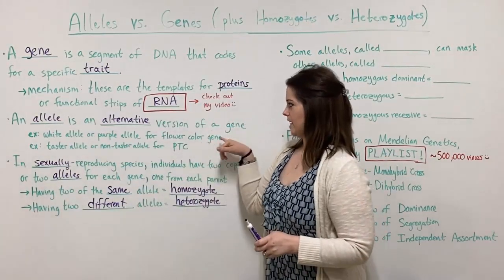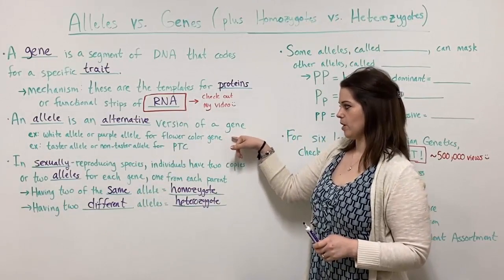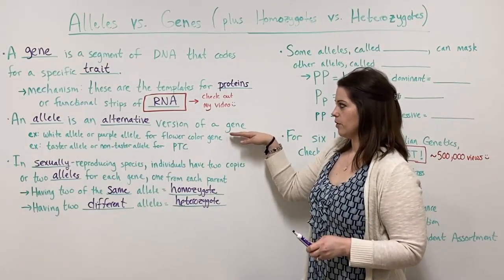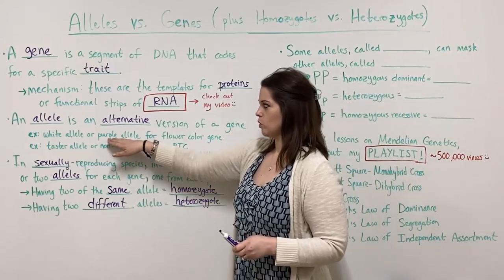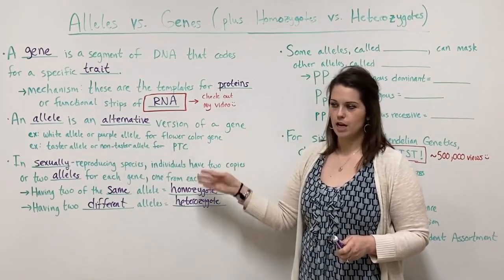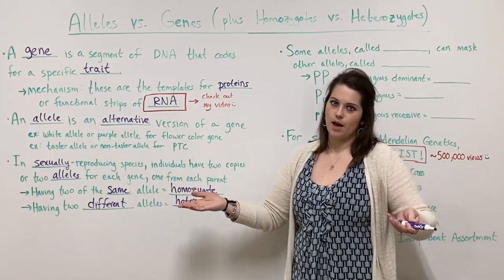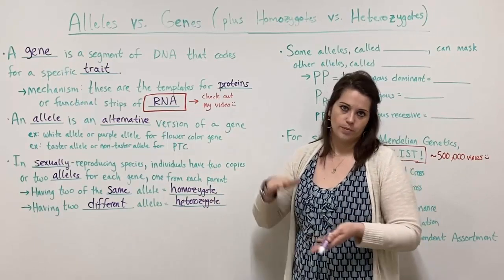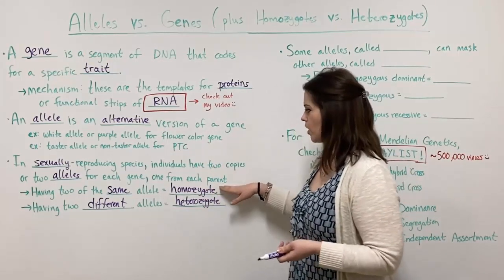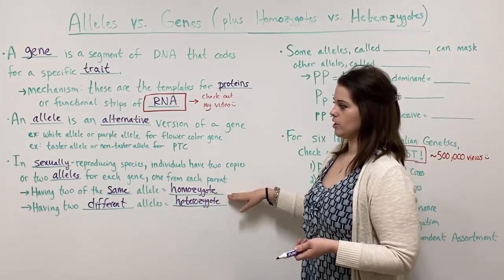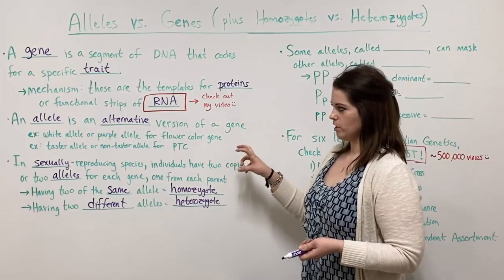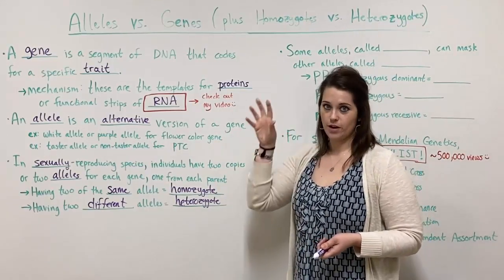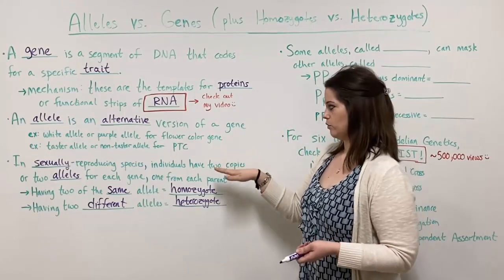A homozygous individual — speaking specifically about a given locus, because with thousands of genes you can be homozygous at some and not others — basically, if the individual has two different alleles for a given gene, that is called being a heterozygote. For example, a plant could be homozygous for flower color but heterozygous for seed color, seed texture, or plant height. Homozygous and heterozygous describe whether the alleles are the same or different at a specific locus.